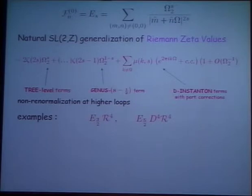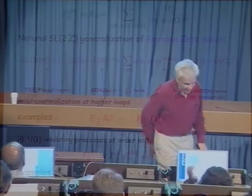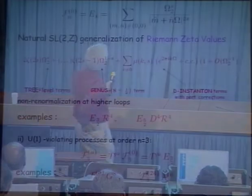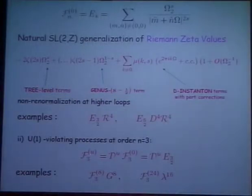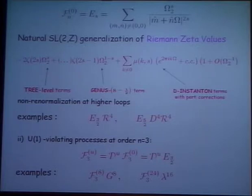The other example of this type is four derivatives, or S squared, on R to the fourth, which has another Eisenstein series with only a two-loop term — it has a tree level, and when s is five-halves, it's a two-loop term. There are also processes at this order N equals three in which U is non-zero. Examples of such processes are lambda to the sixteenth — that's the sixteen dilatini — which violates the U charge by twenty-four units, and G to the eighth, which violates it by eight units.